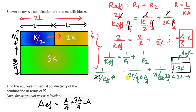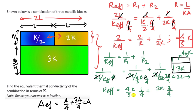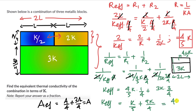After cancelling 2L and A, the equation in terms of K becomes: k_effective equals (4K/5 times 1/4) plus (3K times 3/4), which gives K/5 plus 9K/4. Taking the LCM gives k_effective equals 4K/20 plus 45K/20 equals 49K/20. So the equivalent thermal conductivity of the combination of three metallic blocks is 49K/20.